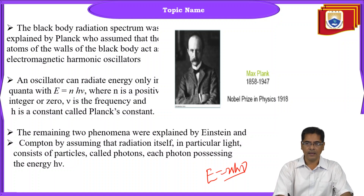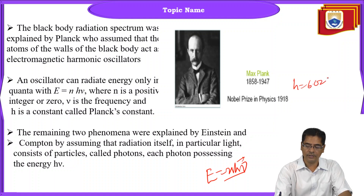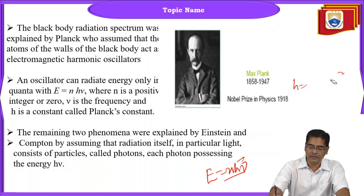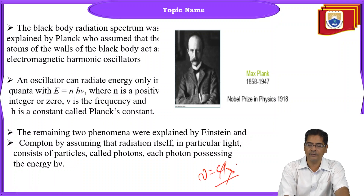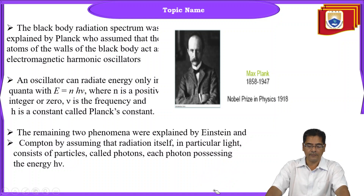Planck's constant has a value of h equals 6.626 into 10 to the power minus 27 erg per second, which is a constant value. Nu is the frequency of the incoming radiation, written as nu equals c by lambda, where c is the velocity of light and lambda is the wavelength of the radiation.